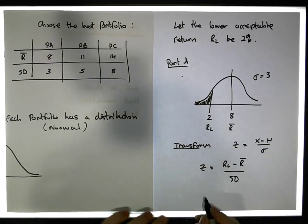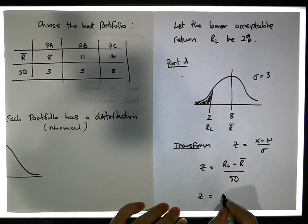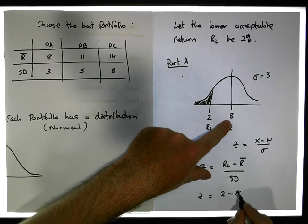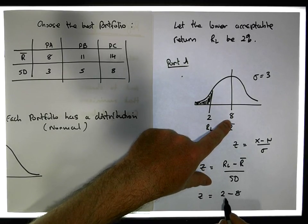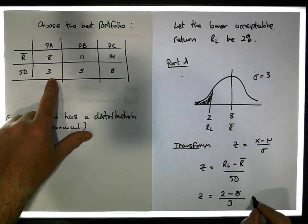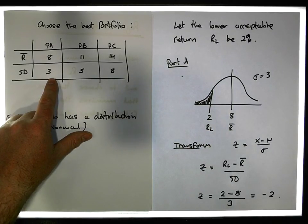So in this case here, we get that Z equals 2, the lower risk limit that I want to accept, minus 8 because 8 is the expected value of this particular portfolio, divided by the standard deviation which is equal to 3. So that gives us minus 2.